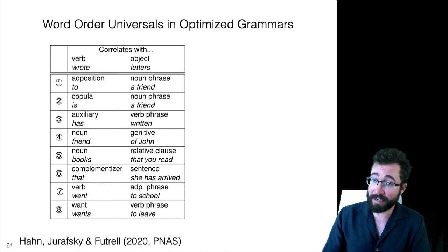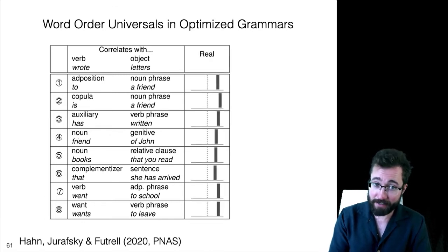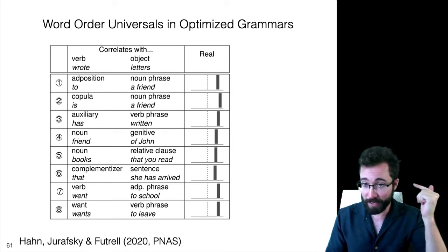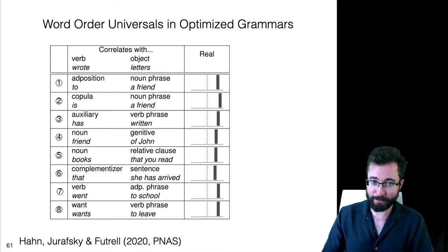There being a correlation means that these dependencies go in the same direction. First, we can ask if these correlations actually hold in universal dependencies tree banks, and they do. Each of these eight dependencies holds quite strongly in universal dependencies tree banks. When verb object points one way, then each of these relations also points that same way.